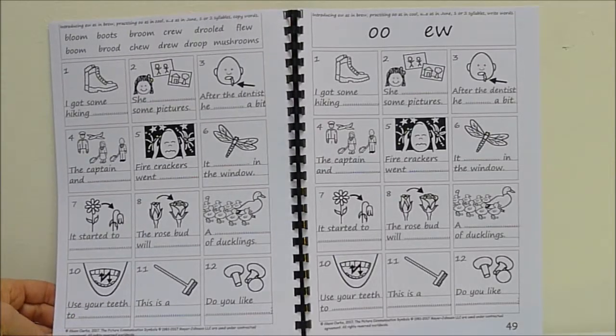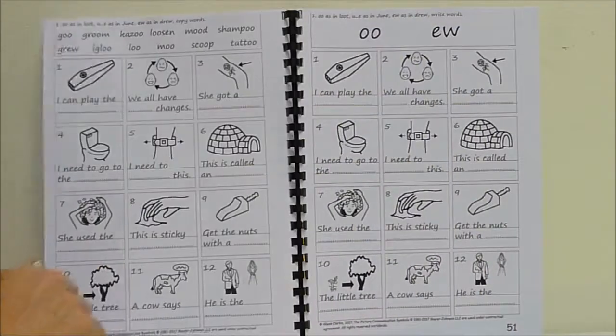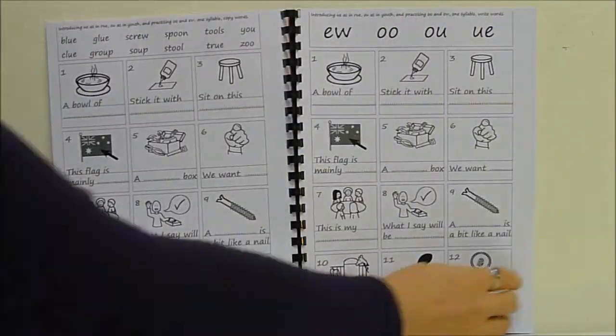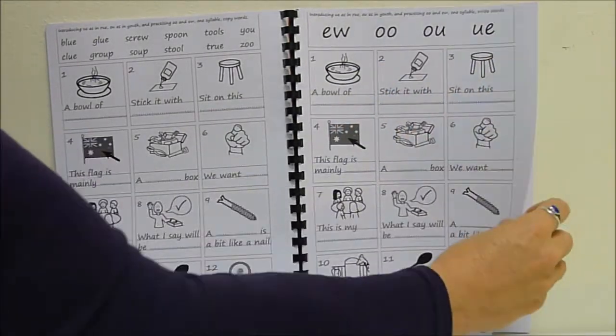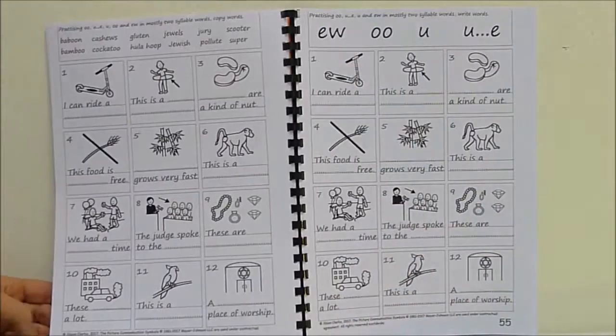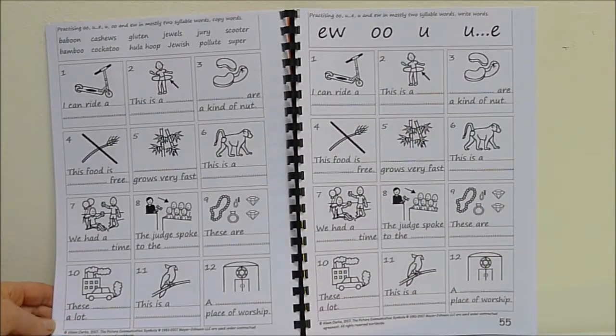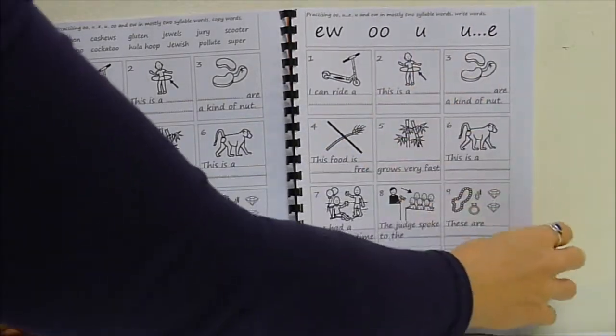OO, as in bloom and boom and boots and broom and crew and drool with two main spellings there. More words, goo, groom, kazoo, loosen, blue, glue. Now we're getting a couple of extras. OO, like in soup and group. OO, like in glue and clue and blue. OO, as in baboon. So slightly longer words. Paloo, tool, a hoop with a letter U by itself for the OO.